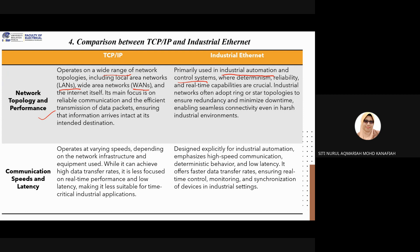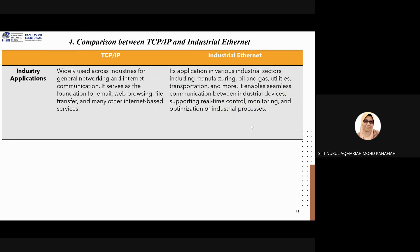Industrial internet emphasizes high-speed communication, deterministic behavior, and low latency, enabling faster data transfer rates and ensuring real-time control, monitoring, and synchronization of devices in industrial settings. In industrial networks, ring or star topology is used to ensure redundancy and minimize downtime, enabling seamless connectivity in harsh environments.